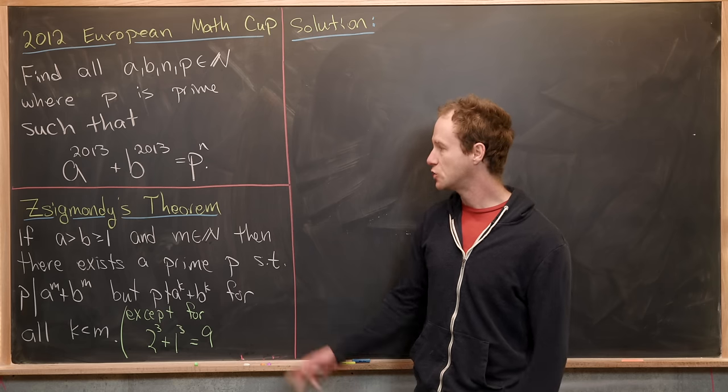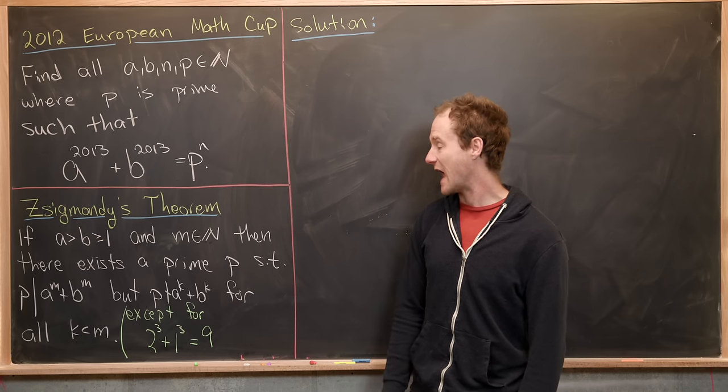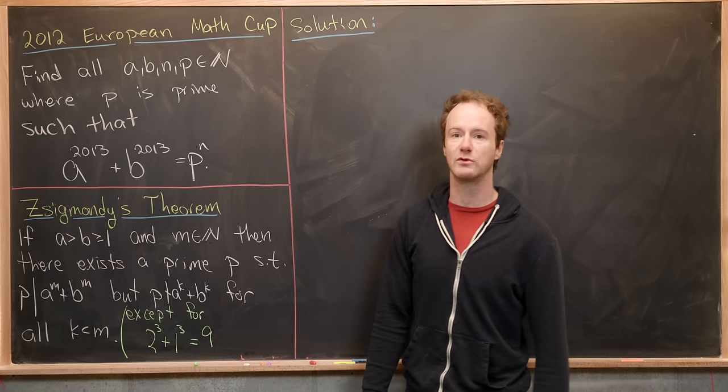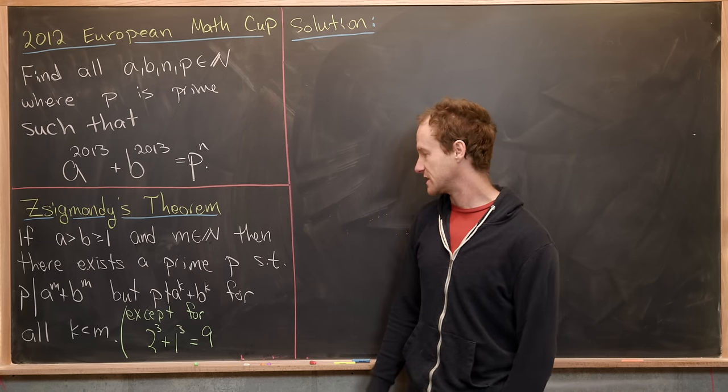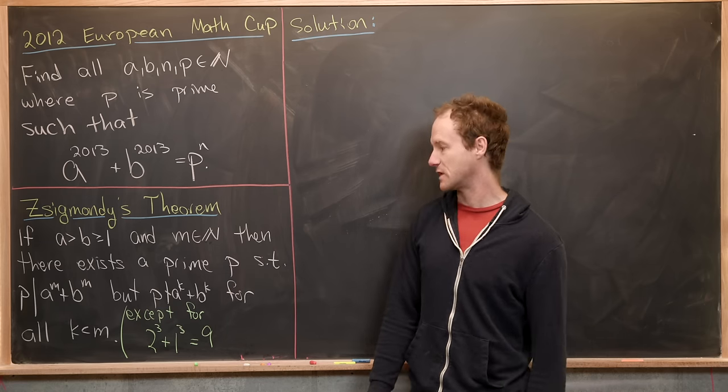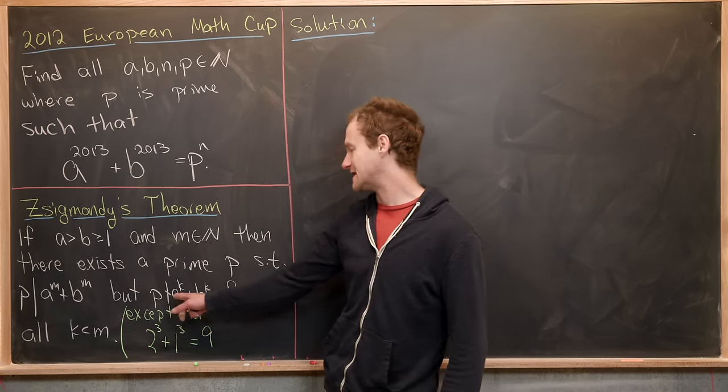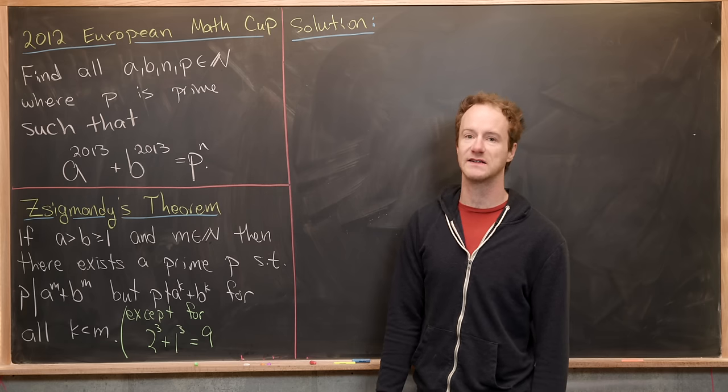And our main tool is going to be this thing called Zsigmondy's Theorem. And it says that if A is bigger than B is bigger than or equal to 1 and M is a natural number, then there exists a prime P such that P divides A to the M plus B to the M, but P does not divide A to the K plus B to the K for all K less than M.